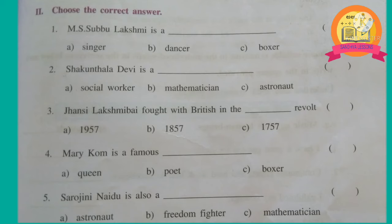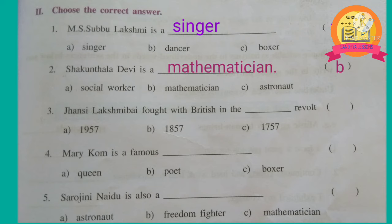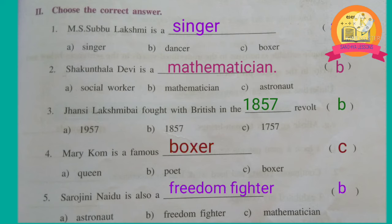2nd Roman: choose the correct answer. 1st one: M.S. Subbulakshmi is a singer. 2nd one: Shakuntala Devi is a mathematician. 3rd one: Jhansi Lakshmi Bai fought with the British in the 1857 revolt. 4th one: Mary Kom is a famous boxer. 5th one: Sarojini Naidu is also a freedom fighter.